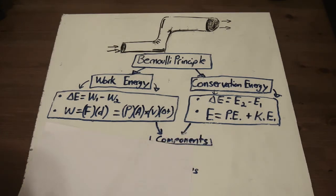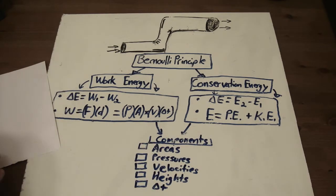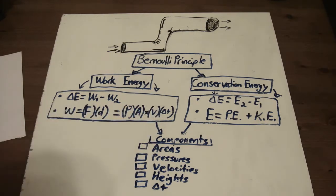All right, so what are the components of this equation? If we analyze all these, we can tally up that we are going to need areas, we're going to need pressures, we're going to need velocities, and we're going to need heights and a delta T. So let's look at this piping system on top and see where these components are going to be found.